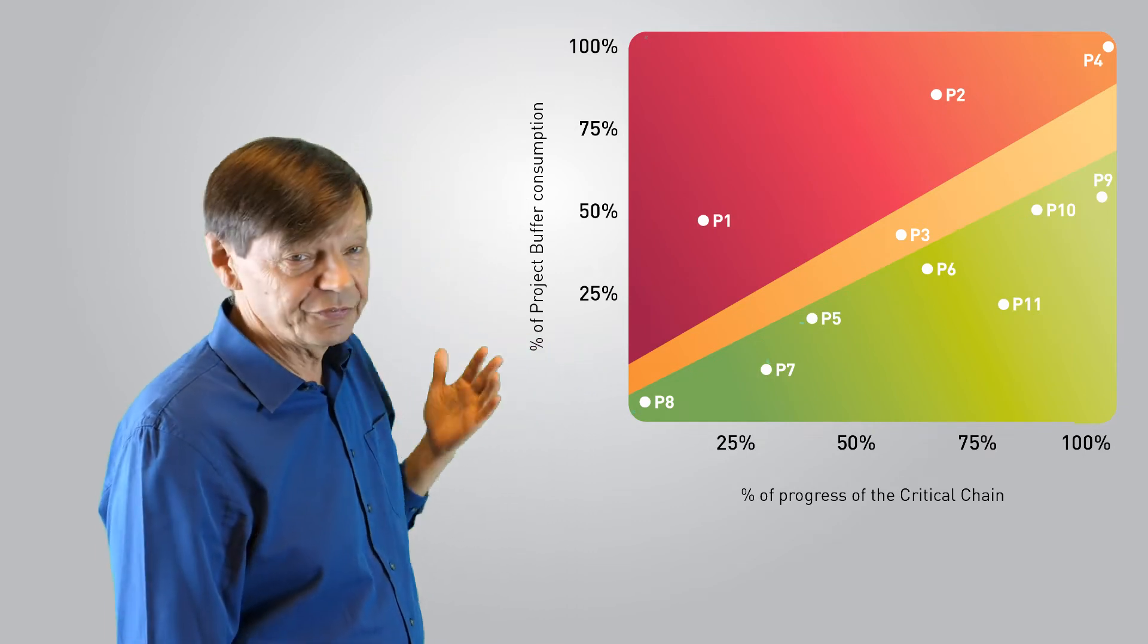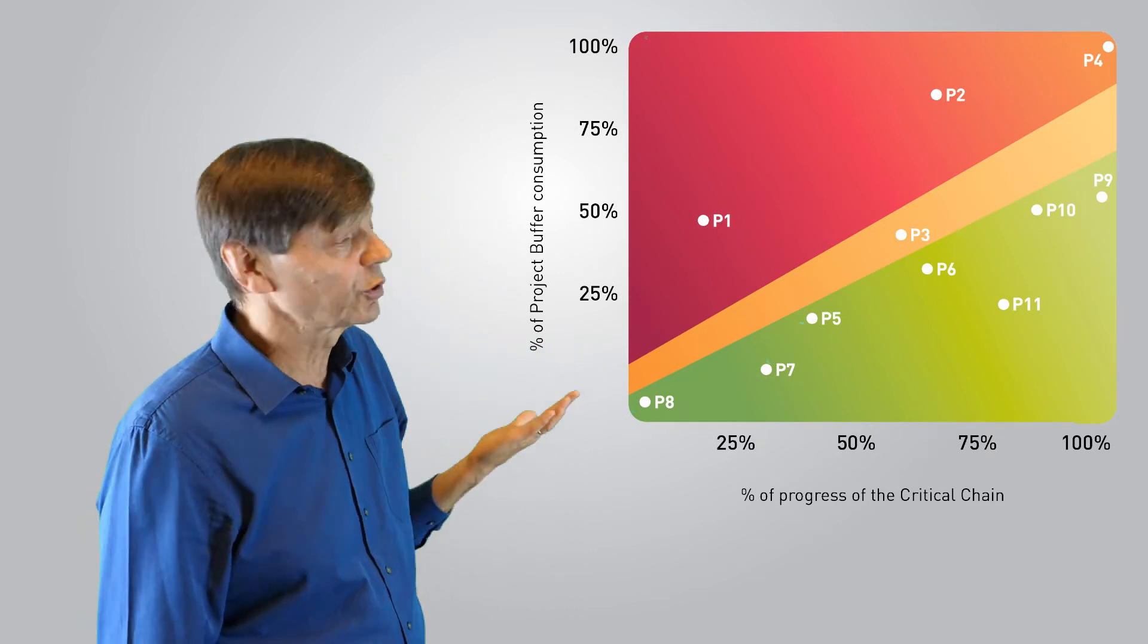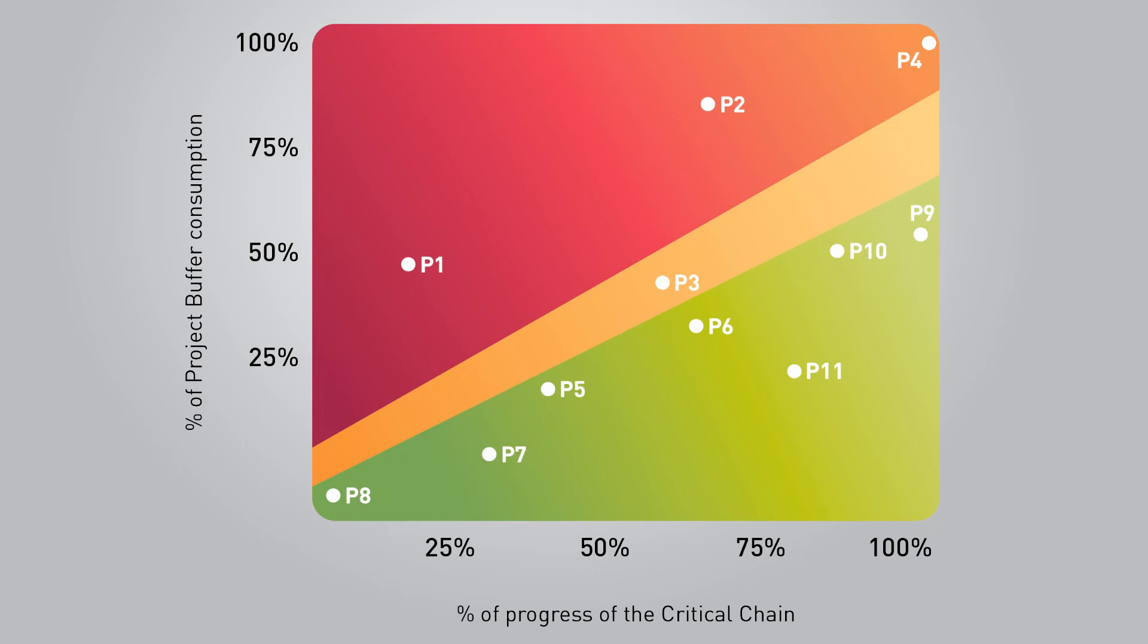So it is the project which needs the most help, and in fact the relative priorities of projects on a fever chart are defined by the slope. So number one here is the priority, number two over there is the next priority, and so forth.